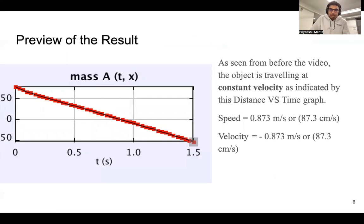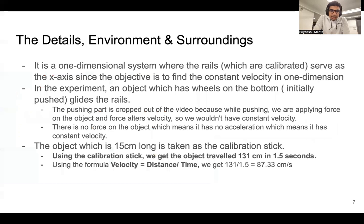This is the distance-time graph which shows a negative slope, a negative and constant slope. A constant slope means that we have a constant velocity, and negative slope means we have negative velocity because the object is going in the negative x direction. The velocity of the object is negative 87.3 centimeters per second.